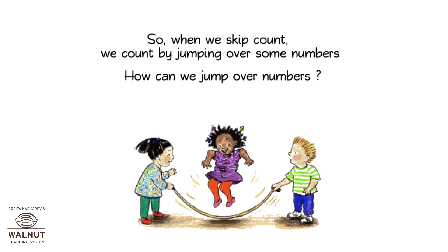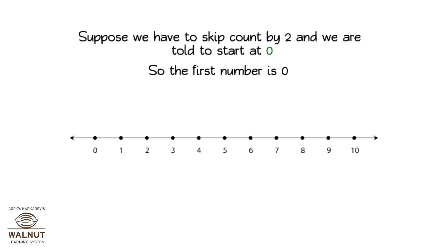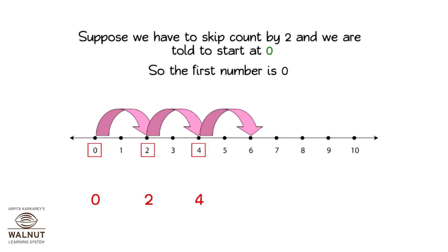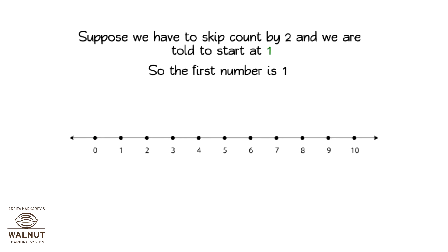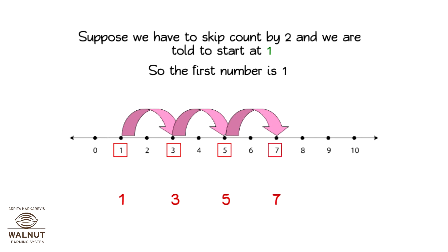How can we jump over numbers? It's easy and it's fun. Watch! Suppose we have to skip count by two and we are told to start at zero. So the first number is zero, then two, then four, then six, then eight, and finally ten. Suppose we have to skip count by two and we are told to start at one. So the first number is one, then three, then five, then seven, and then nine. This is how we skip count by two.